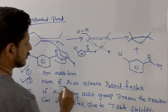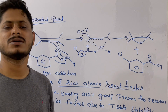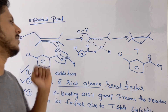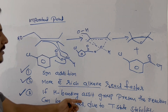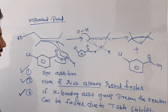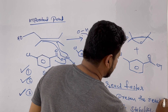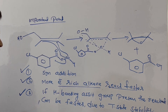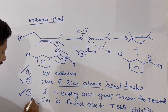If your alkene is highly electron-rich, it can easily react with mCPBA. The third point is that if a hydrogen-bonding-capable group is present in the reactant, the reaction can be faster due to transition state stabilization.